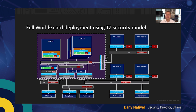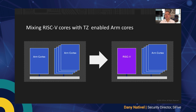This is the ideal situation for fresh new designs where the whole WorldGuard is deployed. However, sometimes the design window doesn't allow such significant change, so being able to migrate to a new ISA step by step is preferred. There is a fairly simple way to use WorldGuard to swap an existing TrustZone-enabled ARM core with a RISC-V core while keeping other ARM cores around. This greatly limits the risk of changing the security model or the hardware system architecture.